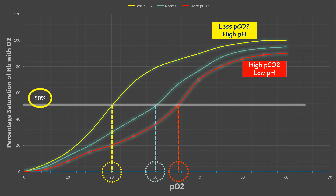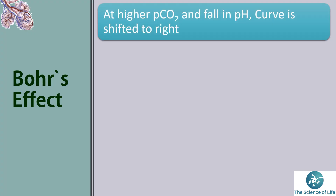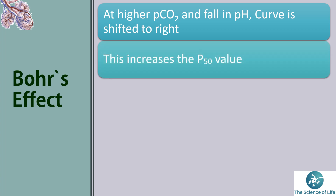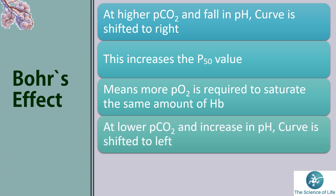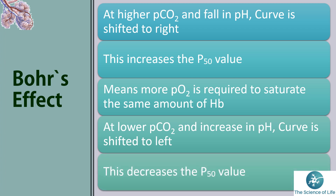Theoretical summary: At higher PCO₂ and fall in pH, the curve is shifted to the right — this increases the P50 value. At lower PCO₂ and increase in pH, the curve is shifted to the left — this decreases the P50 value. This means more partial pressure of oxygen is required to saturate the same amount of hemoglobin.